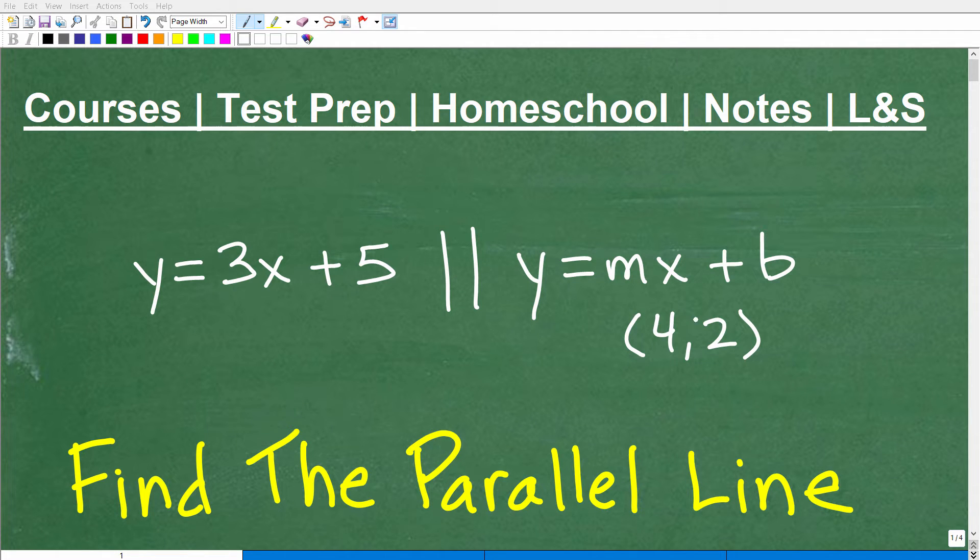Okay, if you're taking any sort of algebra class, you're definitely going to need to be able to handle a problem like this. And here's the situation. We have a line, y equals 3x plus 5, or a linear equation. And we want to find another line that's parallel to this line. And this other line passes through the point 4, 2.